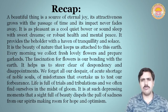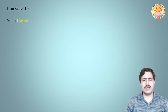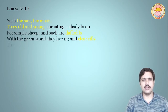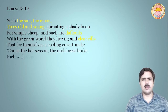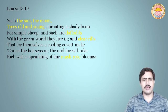We discussed that a thing of beauty is a joy forever. So let's continue the poem. Today's lines are number 13 to 19: 'Such the sun, the moon, trees old and young sprouting a shady boon for simple sheep, and such are daffodils with a green world they live in, and clear rills that for themselves a cooling covert make against the hot season. The mid forest brake rich with a sprinkling of fair musk rose blooms.'